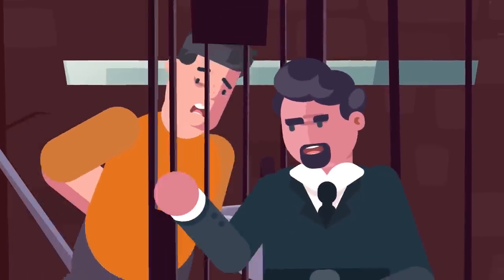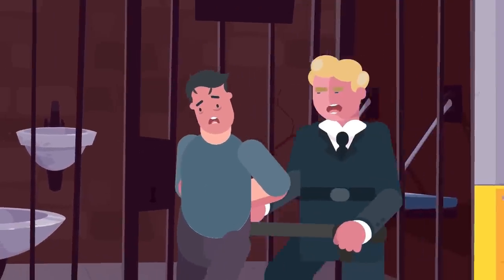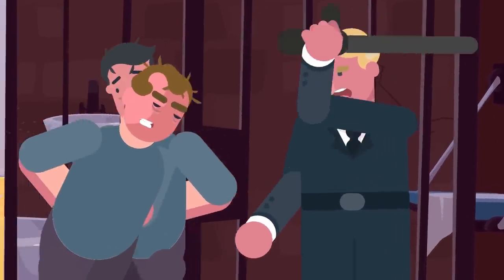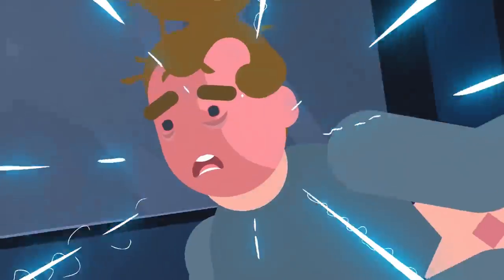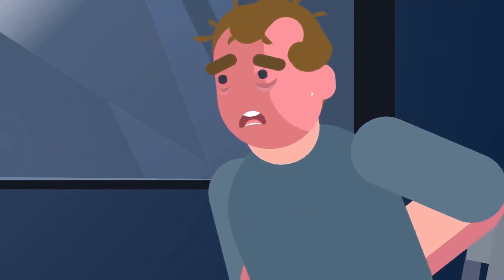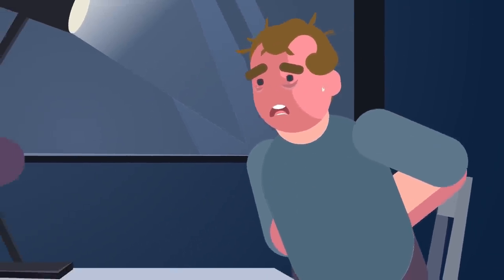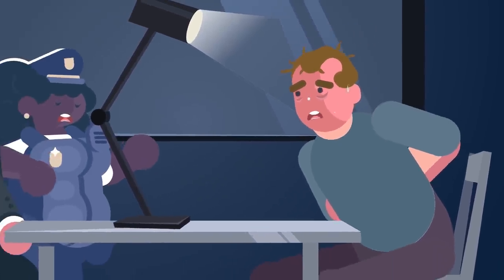This method of torture involved keeping inmates from sleeping by constantly moving them around, making them change cells, or waiting for them to fall asleep and then waking them up immediately with a start. The inmates became increasingly disoriented and fatigued, and more likely to slip up in interrogations and give away vital info.